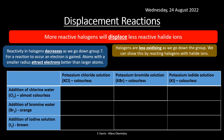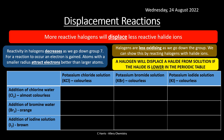Halogens are less oxidizing as we go down the group. A halogen will displace a halide from solution if the halide is lower in the periodic table. Chlorine water reacting with potassium chloride — both equally reactive — gives no reaction. The aqueous and organic solutions both remain colorless.